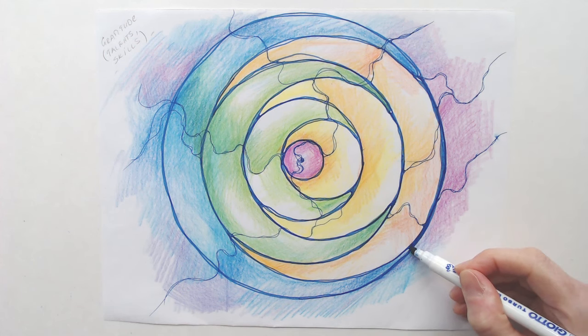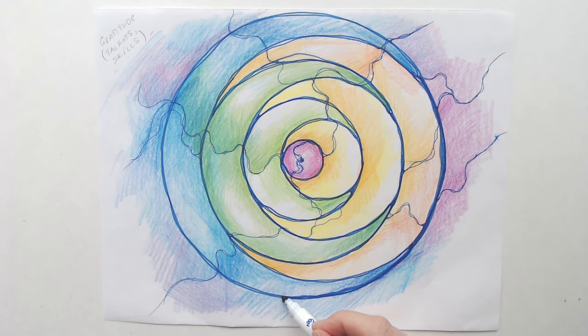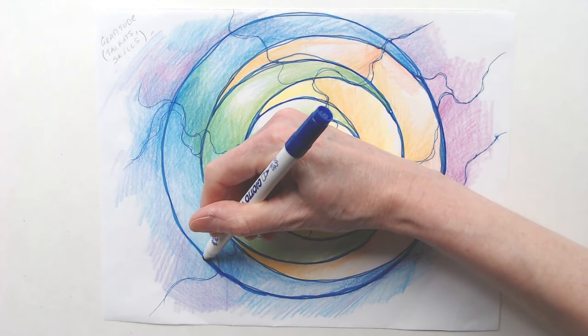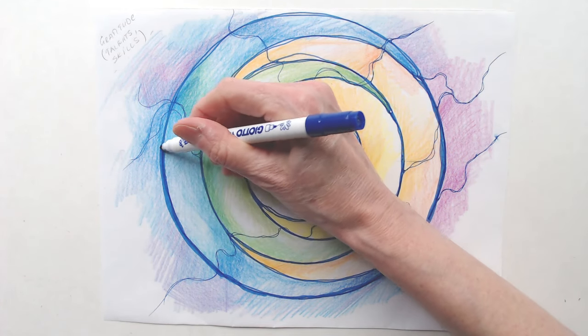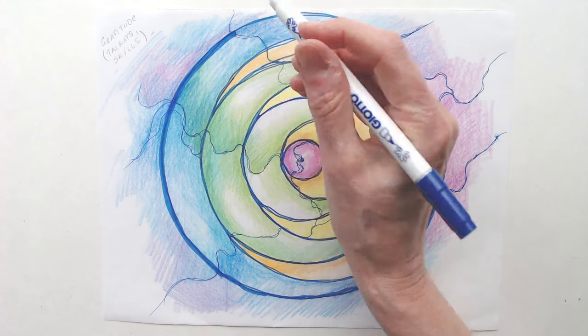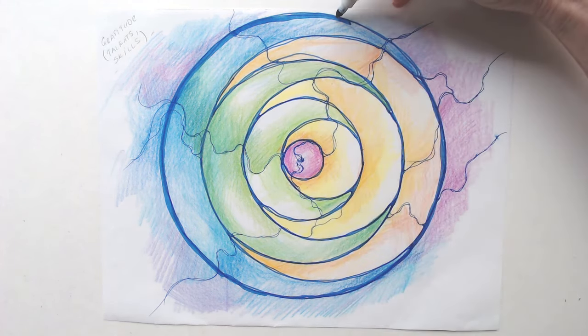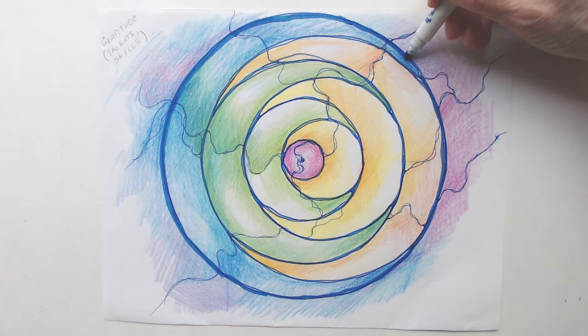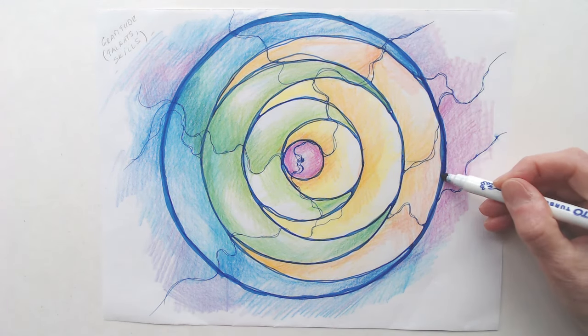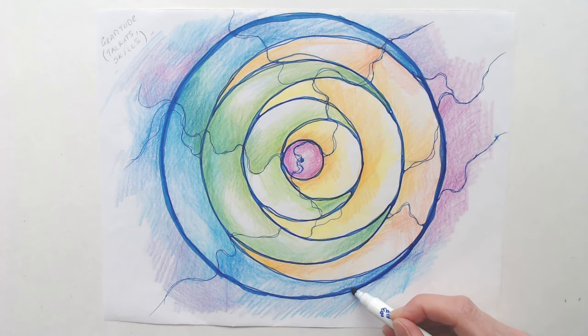Turquoise is a blend of blue and green, symbolizing creativity, communication, and emotional balance. It helps us express ourselves with clarity and authenticity. Turquoise connects me to the flow of creativity and communication.